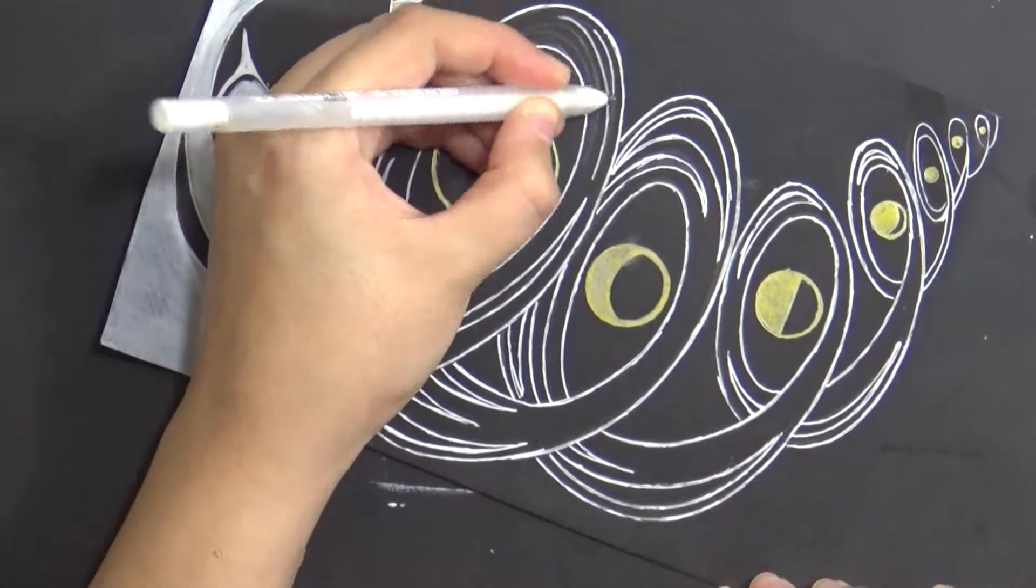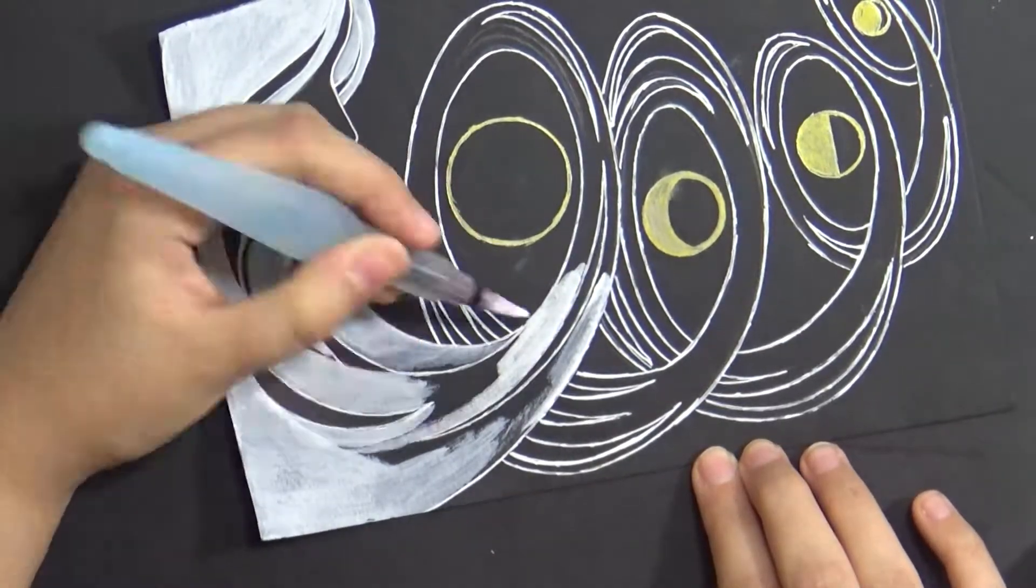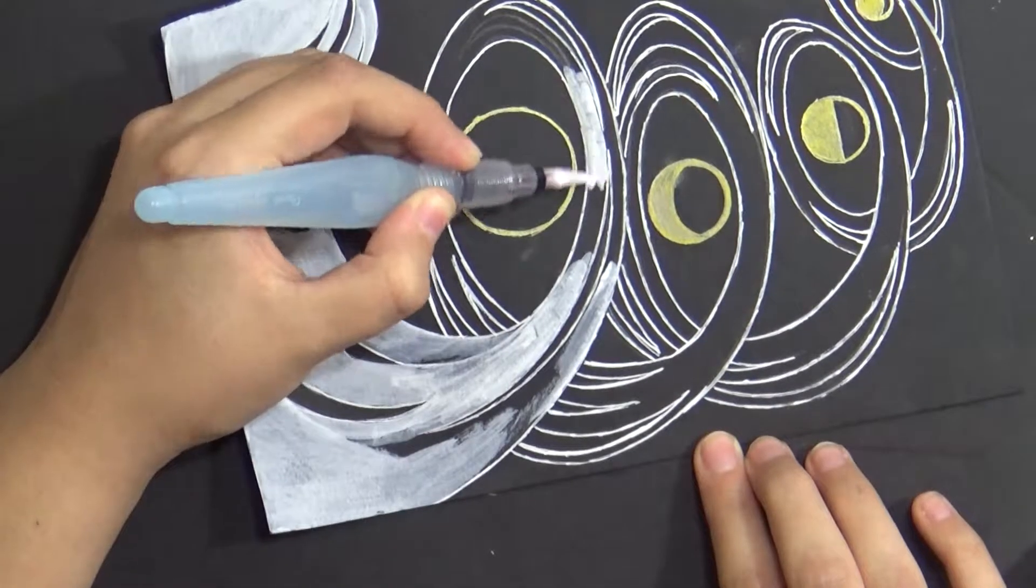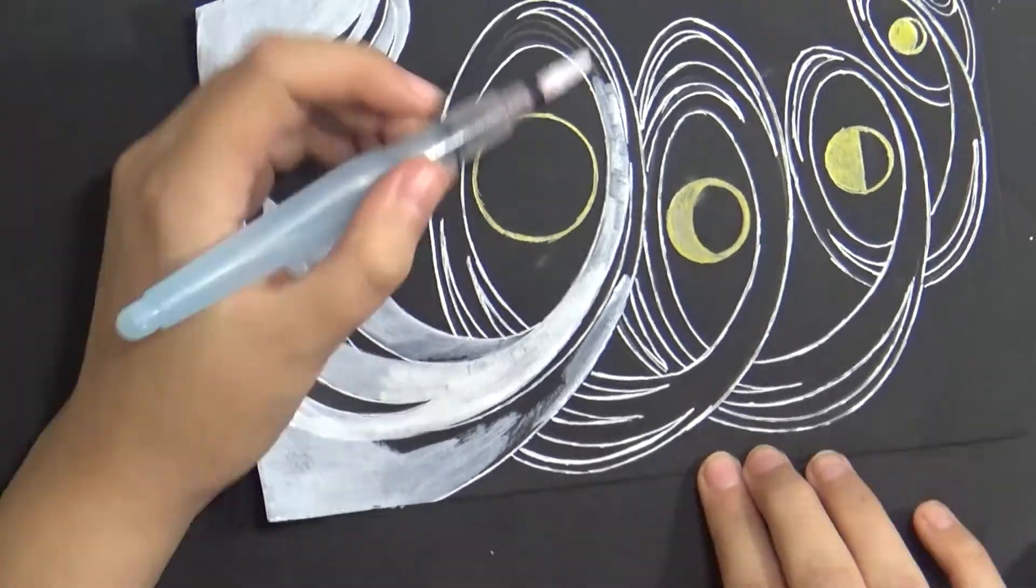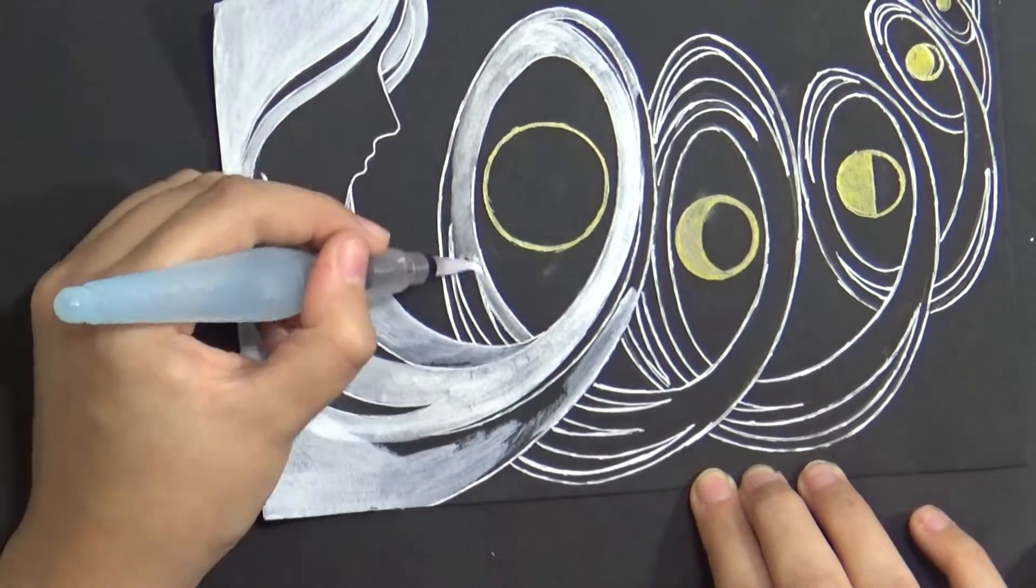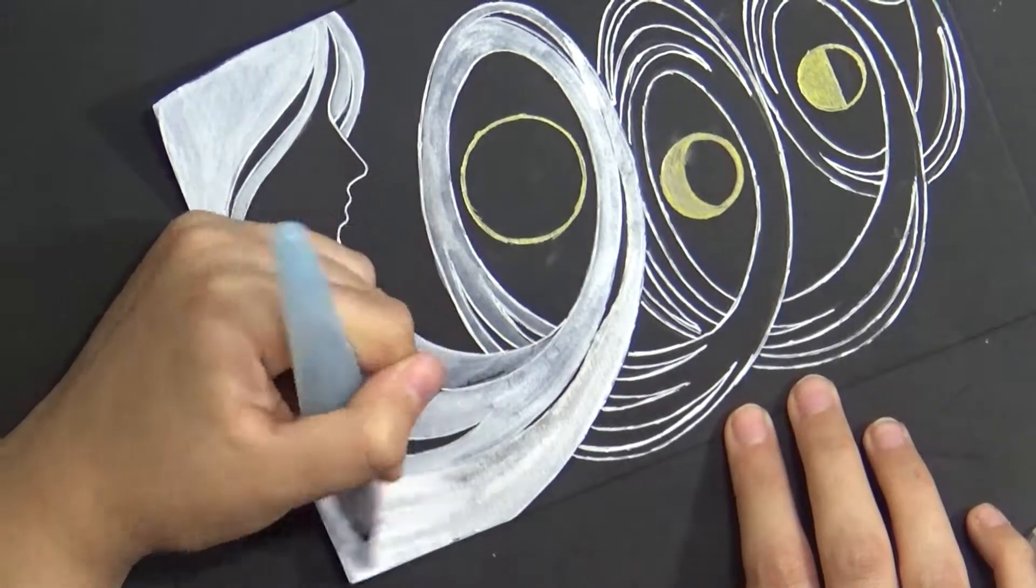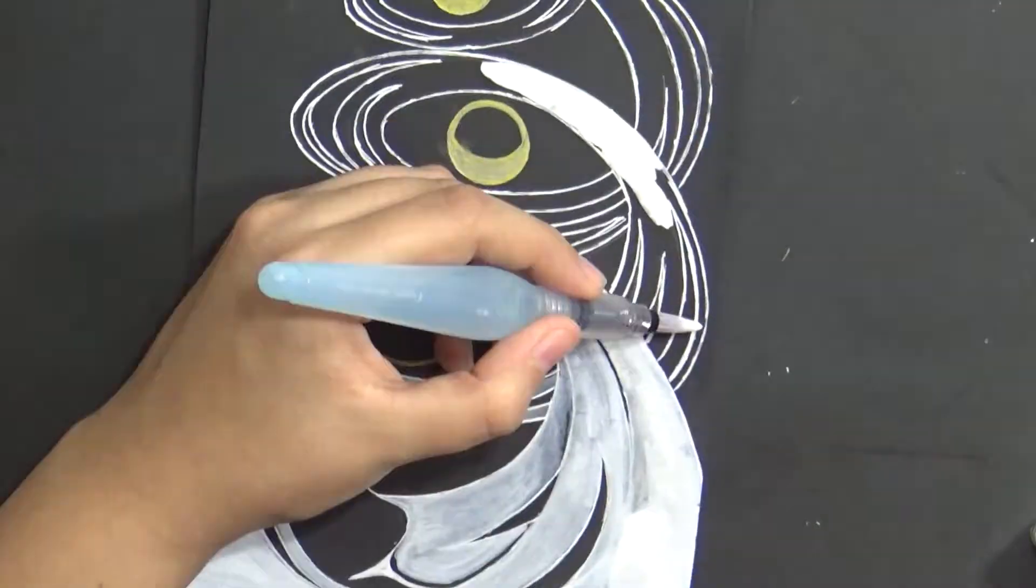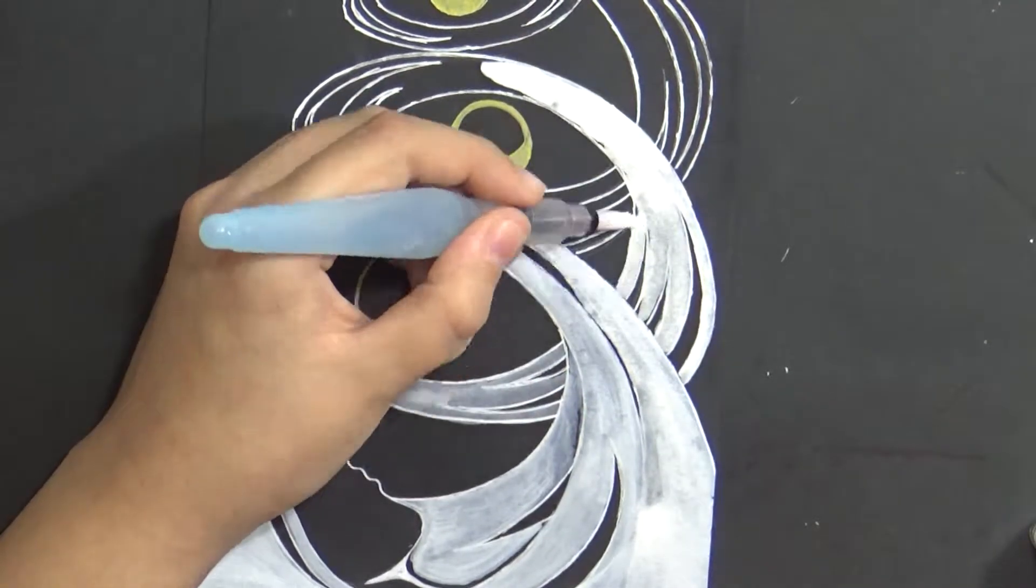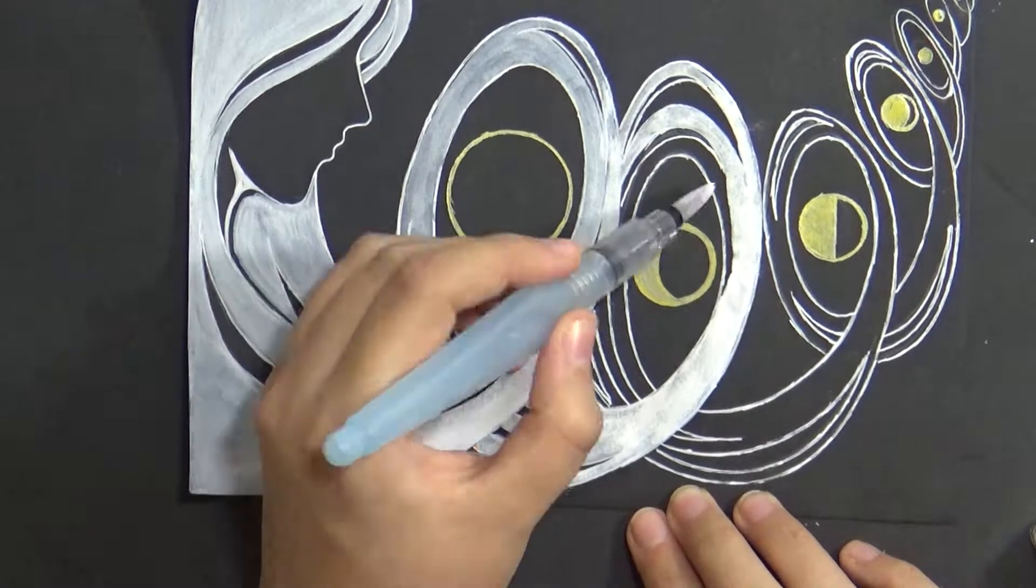So I came up with an idea to create this gorgeous girl. I'm gonna keep her very simple, she's gonna be just a silhouette with this really long white hair that wraps around and twists and creates those loops. In every loop I'll have a different phase of the moon.